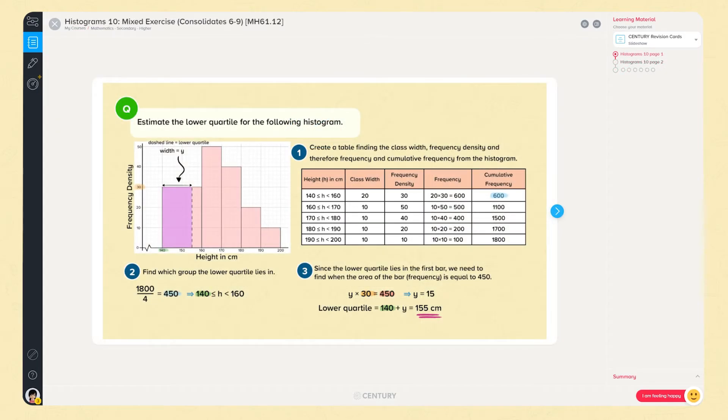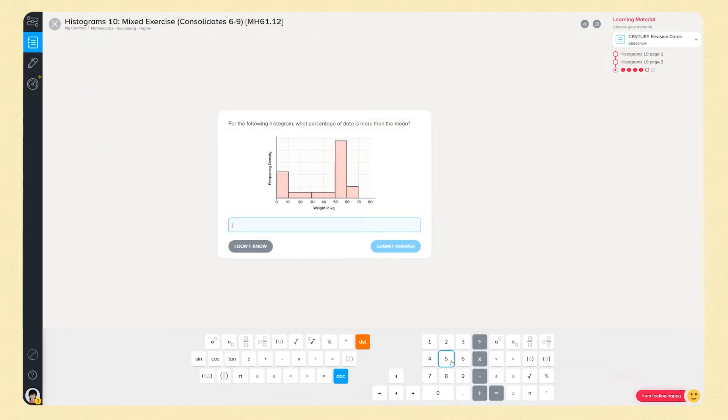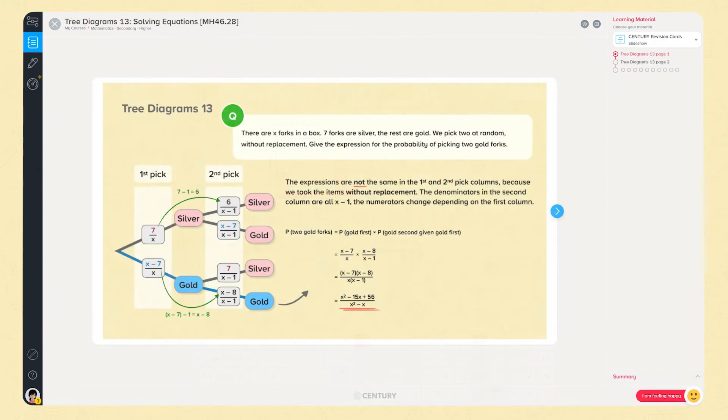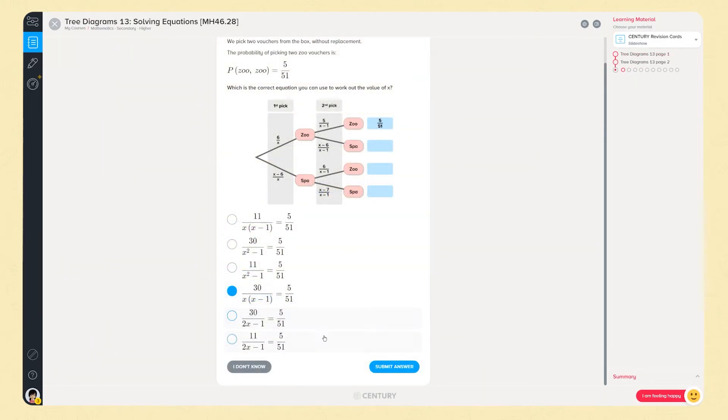More able learners will be challenged with problem solving and multidisciplinary questions. In line with the new specification of GCSE, we have incorporated ratio and proportion into problems where learners have to apply their skills and knowledge.